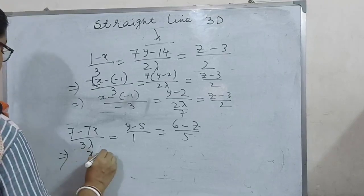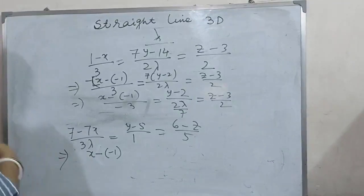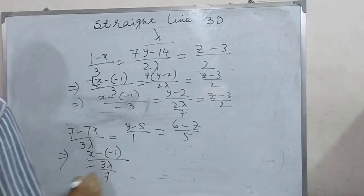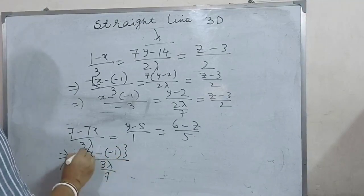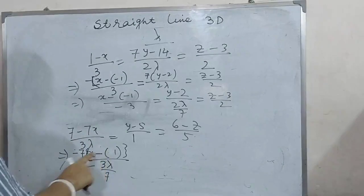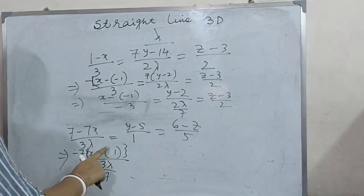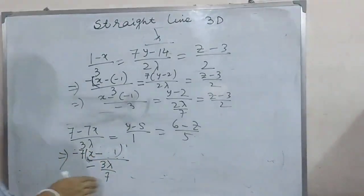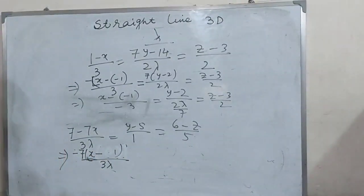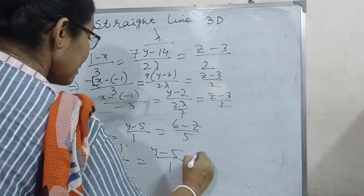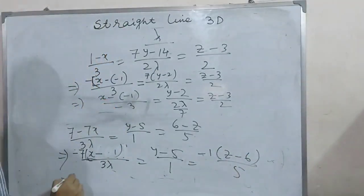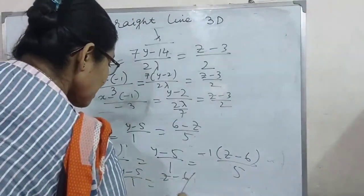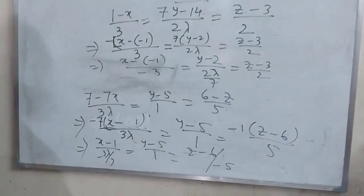For the second equation, converting 7 minus 7x to standard form: (7 minus 7x)/(3 lambda) becomes (x minus 1)/(minus 3 lambda/7) = (y minus 5)/1 = (z minus 6)/(minus 5). This is the standard form of the second equation.